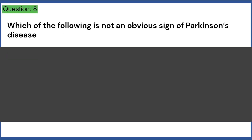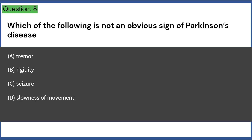Which of the following is not an obvious sign of Parkinson's disease? A. Tremor, B. Rigidity, C. Seizure, D. Slowness of movement, E. All of these. Answer: C.